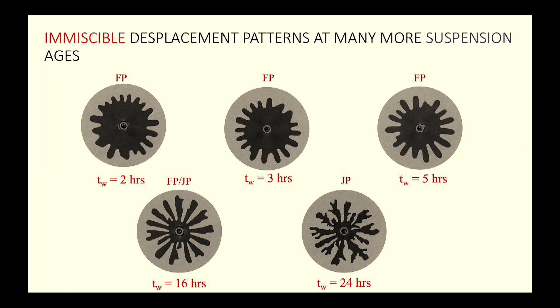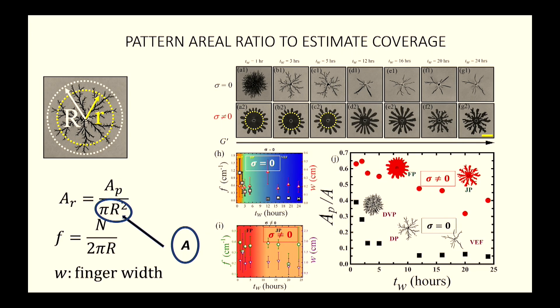For immiscible displacement at several ages, younger samples show a stable interface developing flower-petal-like protrusions, while older samples produce the jagged patterns. Patterns can be varied by changing aging time and also by changing the flow rate of the driving Newtonian fluid.